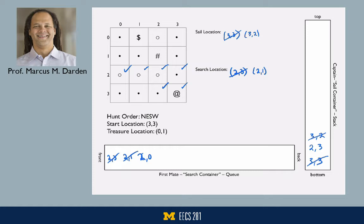Next up, more investigation. The first mate looks to see if there's anything in the container — there is: location 2,0. We go to that location, remove it from the container, make it the current search location 2,0, and begin investigation from there. Looking north of 2,0 is water, not interesting to the first mate; discovered land to the east; more water to the south; and out of bounds to the west. So the active investigation from 2,0 gives no newly discovered locations, but it still ends the investigation loop.